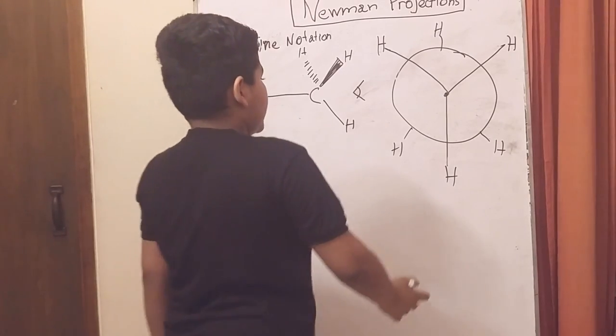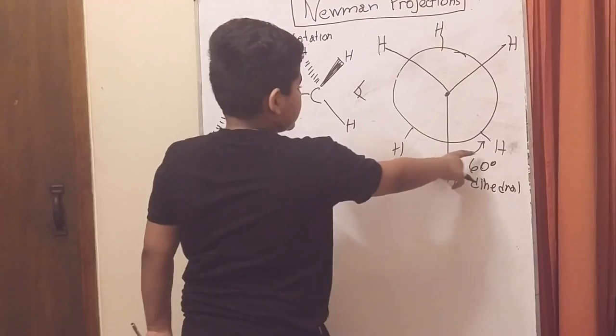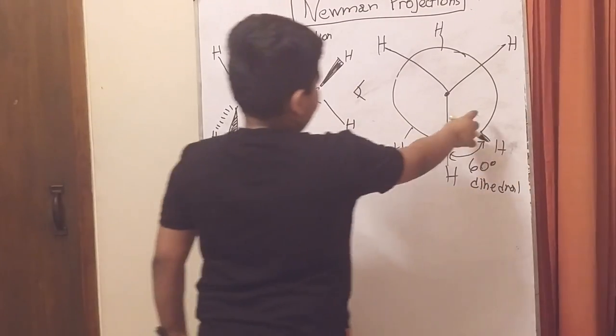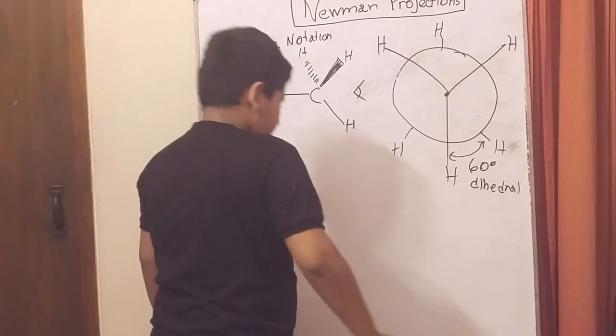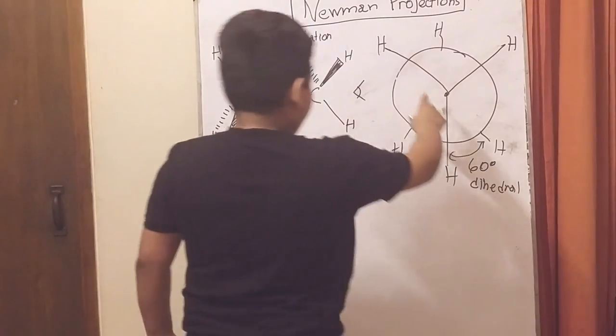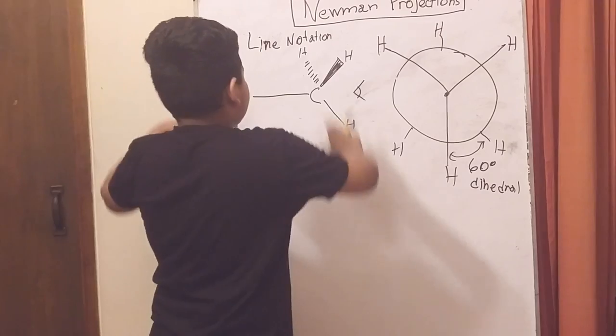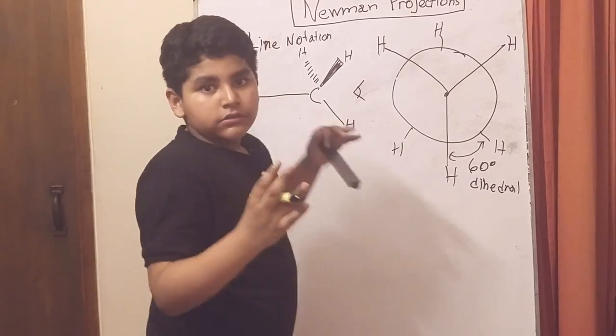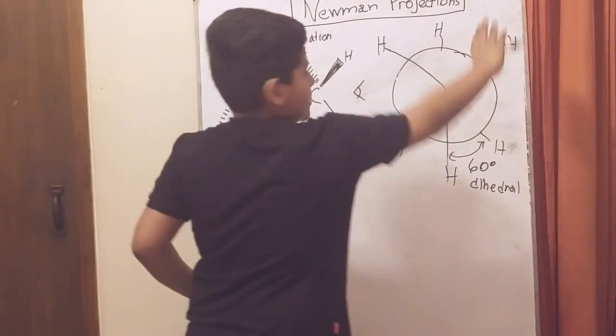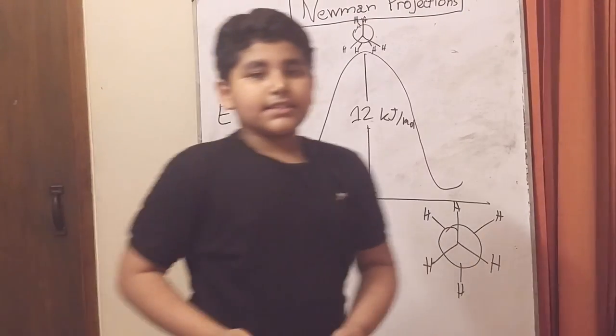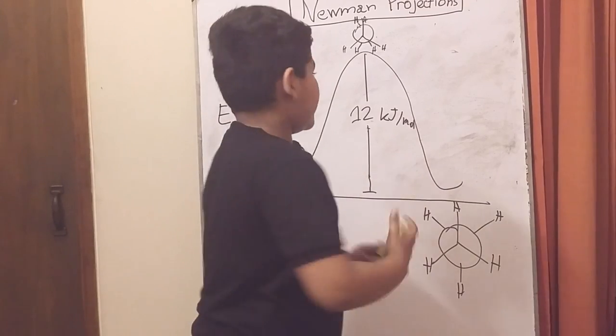There are different conformations and this is an eclipsed conformation with a 60 degree dihedral angle. If we rotate it that way, we're going to get a staggered conformation. That's where these bonds are the closest to each other, and the eclipsed is where the bonds are farthest from each other.